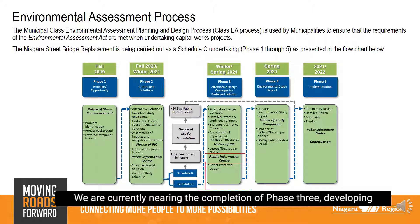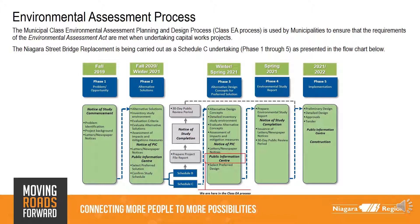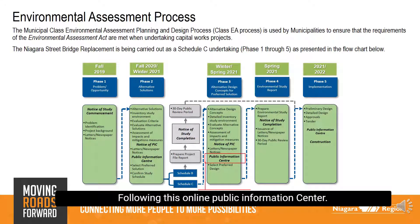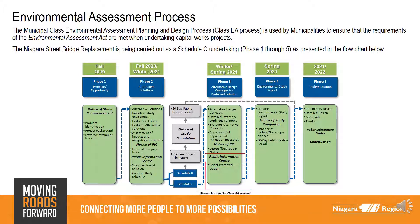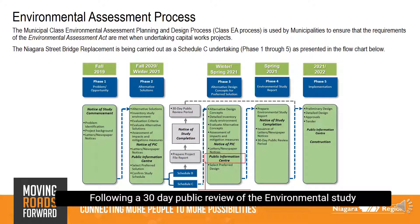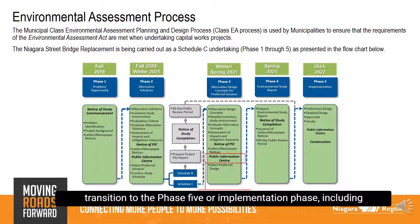We are currently nearing the completion of Phase 3: developing alternative design concepts for the preferred solution. Following this online Public Information Center, the Municipal Class EA process will be completed through the preparation of an Environmental Study Report and publishing of the Notice of Study Completion. Following a 30-day public review of the Environmental Study Report, the Class EA will be completed and the Region will transition to Phase 5, or the implementation phase, including detailed design, approvals, and construction.